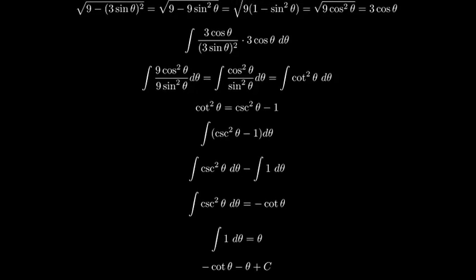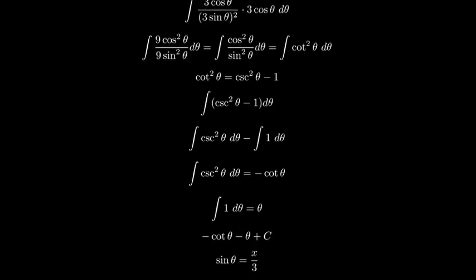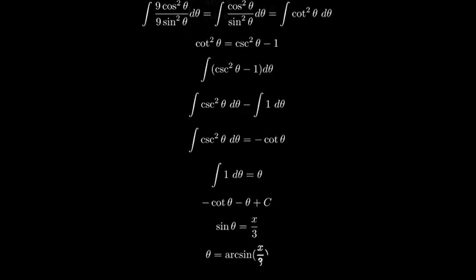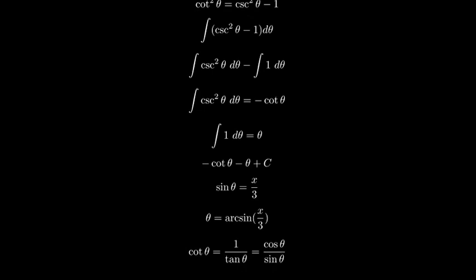Now we convert back to x using our original substitution. Since x equals 3 sine theta, this gives us sine theta equals x over 3, which implies theta equals arcsine of x over 3. To find cotangent of theta, we use the identity that cotangent of theta equals cosine theta over sine theta.